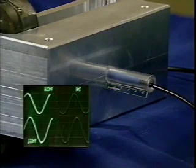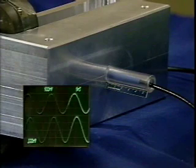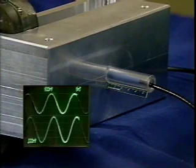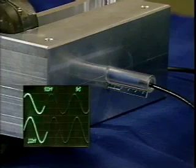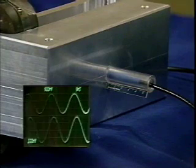The top trace is the current in the primary of the transformer, the driving current. The bottom trace is the probe signal, the magnetic flux density.